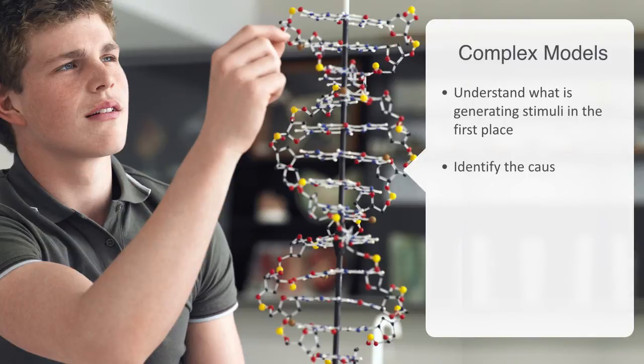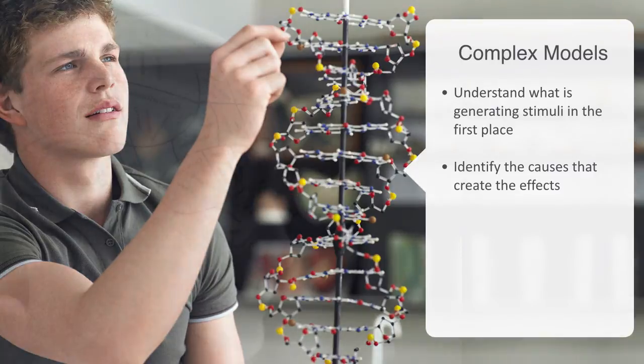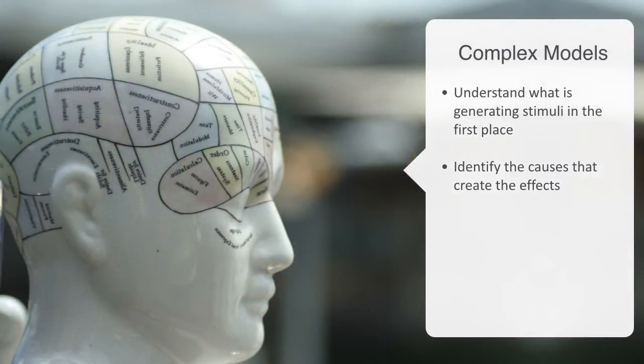A schema allows the agent to identify the causes that create the effects, and not only this, but an agent with an advanced schema is able to also create a model of its own operation. That is, how it responds to any given stimulus and can then try to alter this basic behavior.